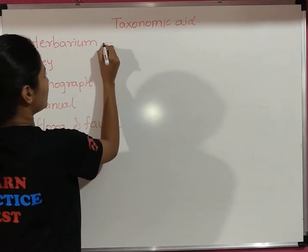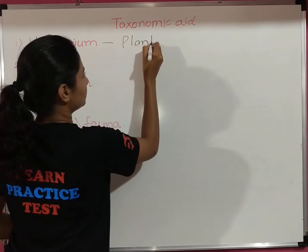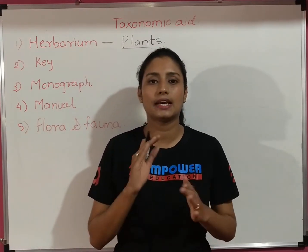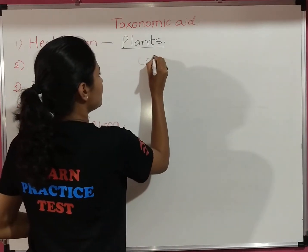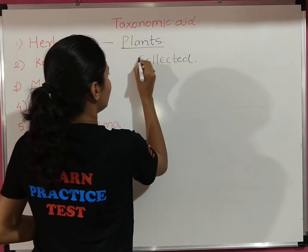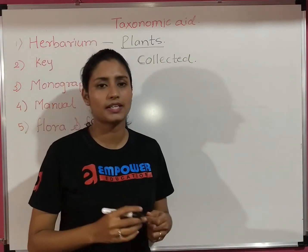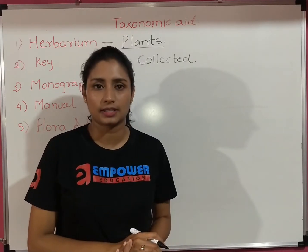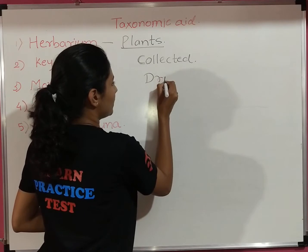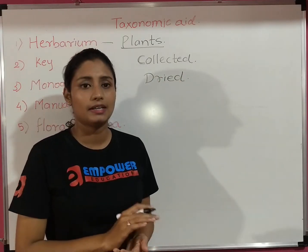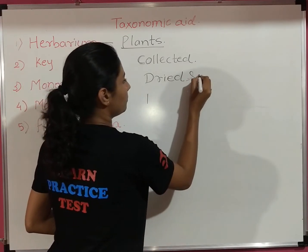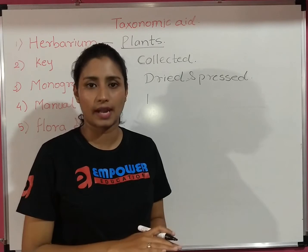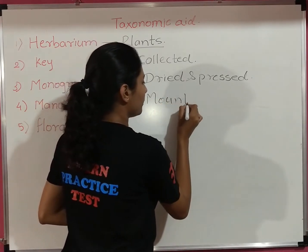Herbarium is a taxonomic aid with the help of which plants are studied. First, the plant is collected — usually plant branches along with flowers. Then it is dried and pressed so that it becomes completely flat.